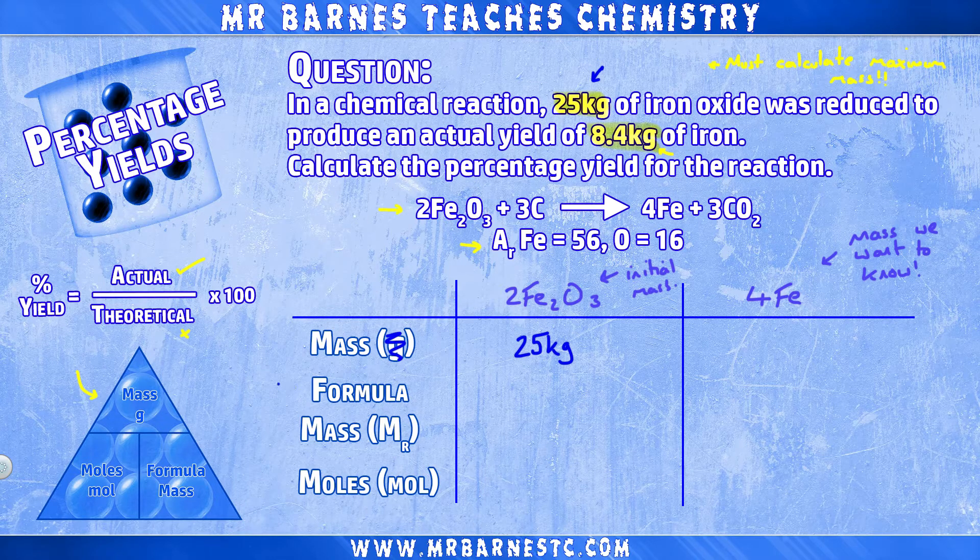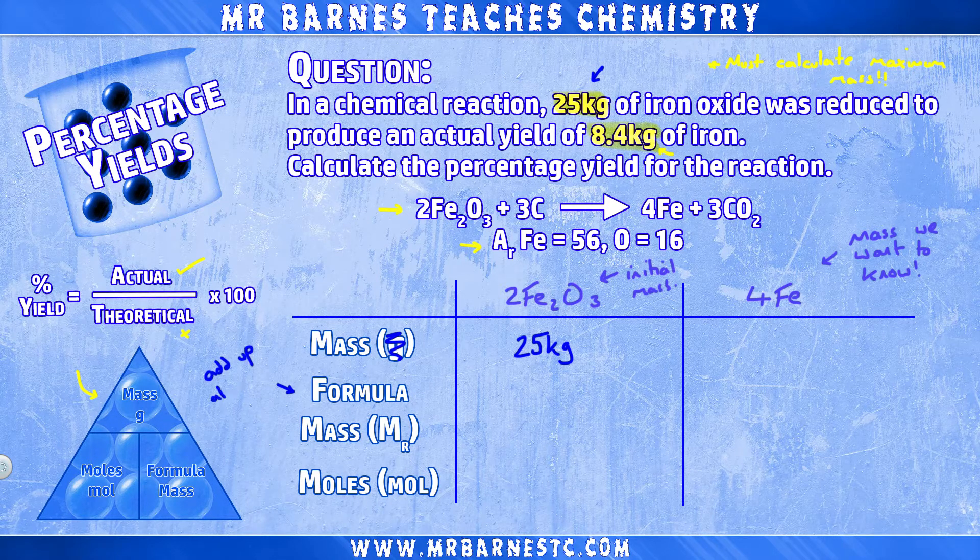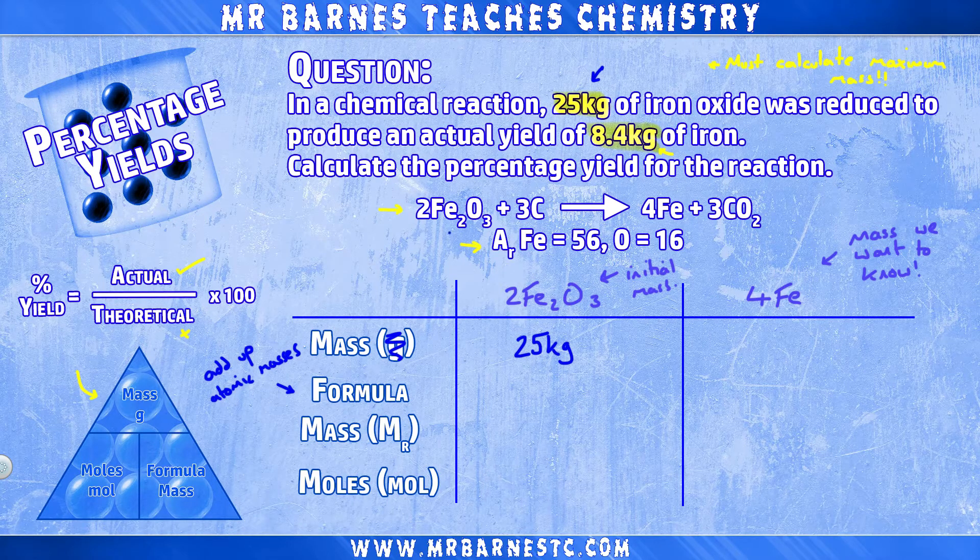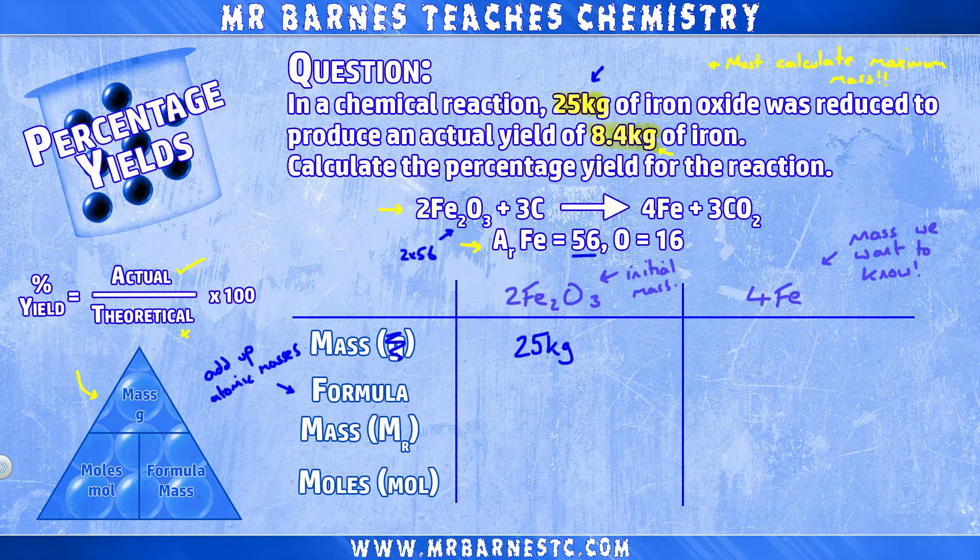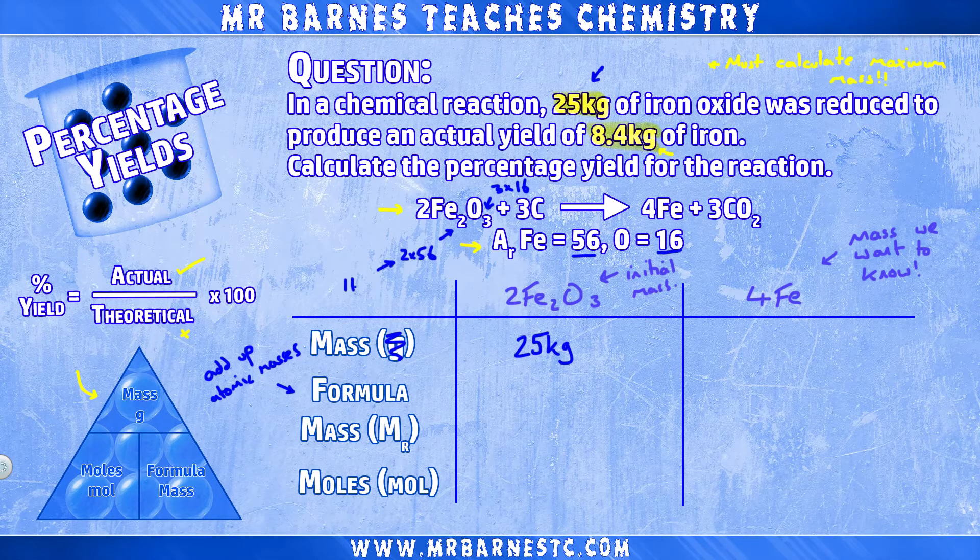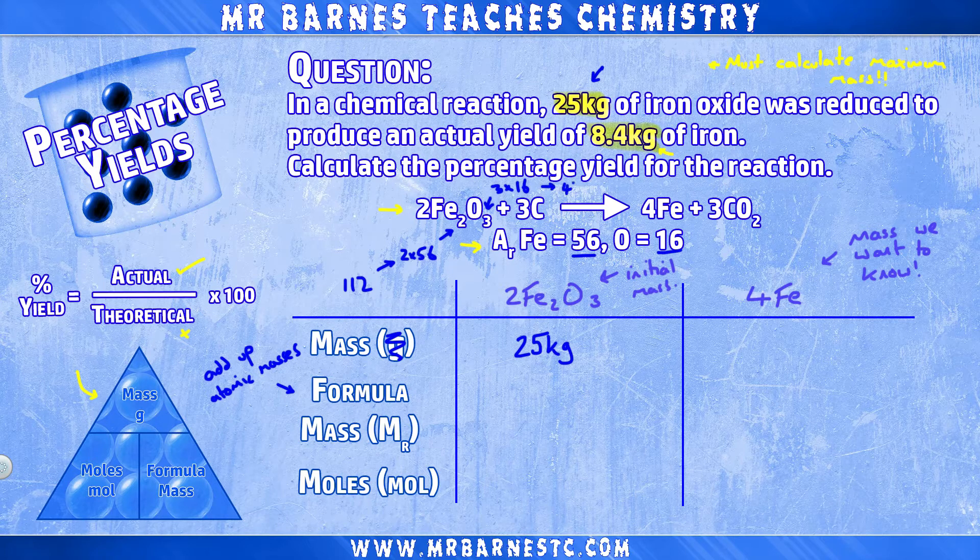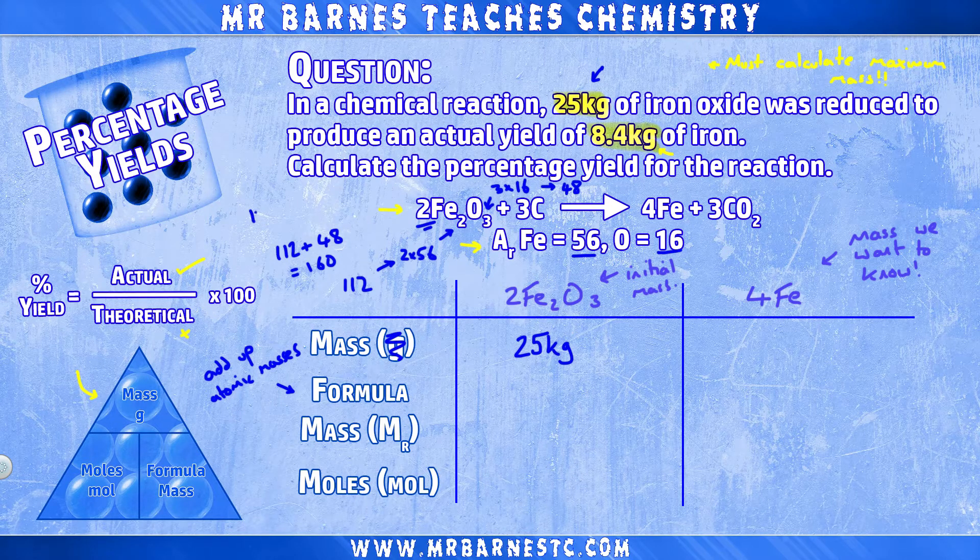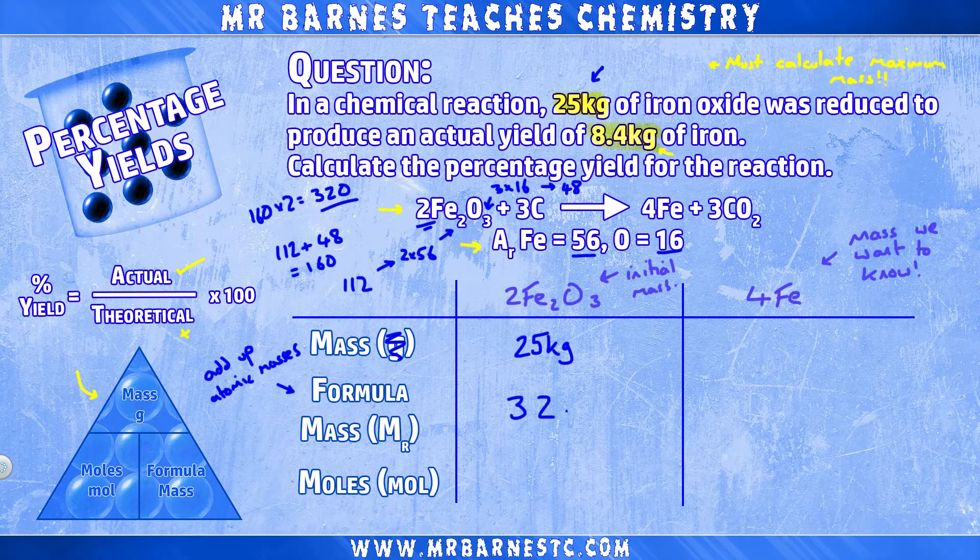We can then work out the formula mass for iron oxide, which hopefully you remember is adding up all of the atomic masses. We have 2 ions, so 2 times 56, and 3 oxygens, so 3 times 16. So that's 112 for iron, 48 for oxygen, giving me a total formula mass of 160 for one of my iron oxides. However, from the balanced equation you can see we have 2 iron oxides, so all we need to do is double this, giving me a formula mass of 320 for iron oxide.